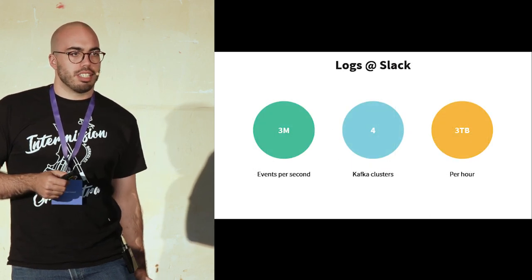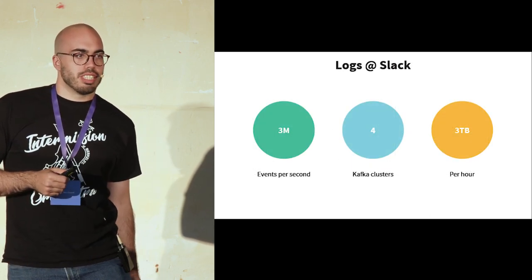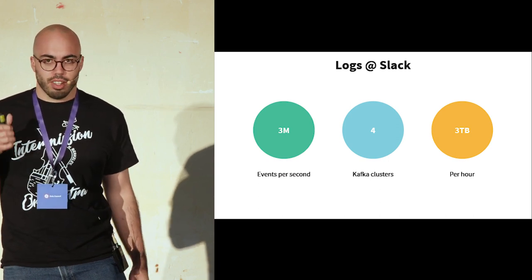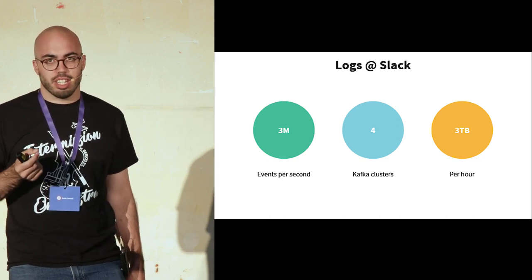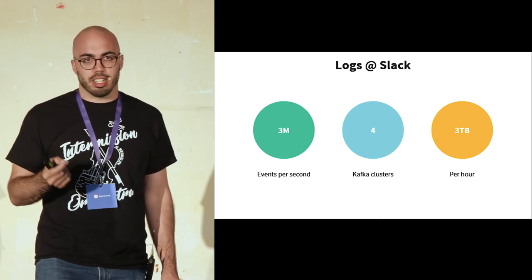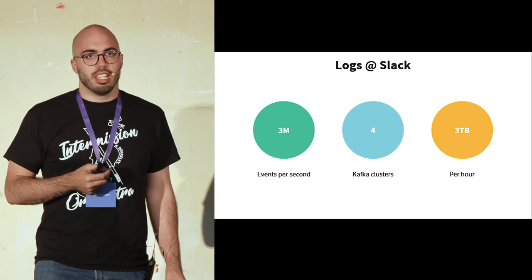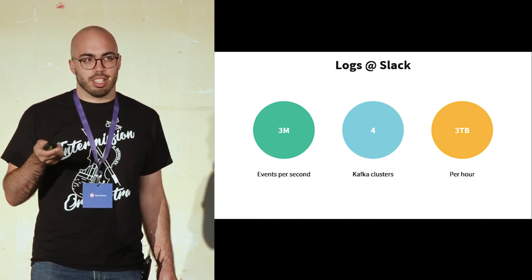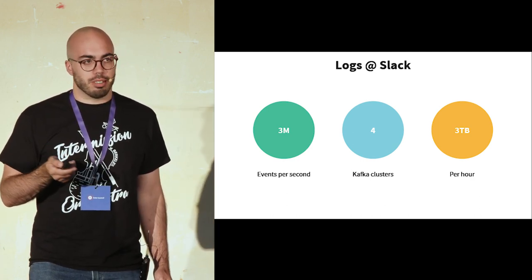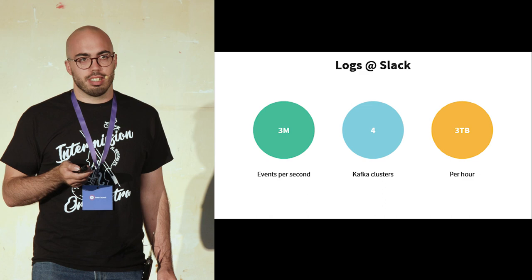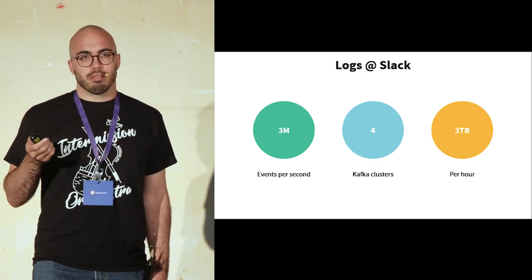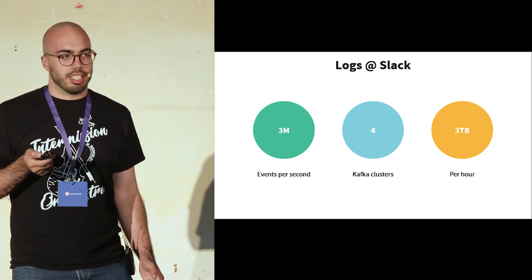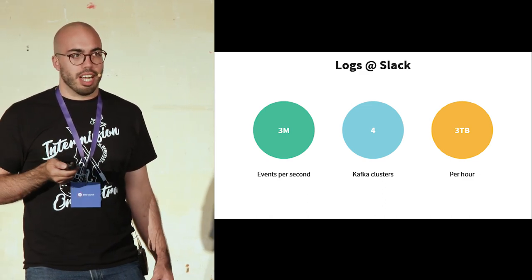At Slack, we have about 3 million events per second at our peak congestion. We queue those events onto four individual Kafka clusters, and at our peak we're processing about 3 terabytes of data per hour.